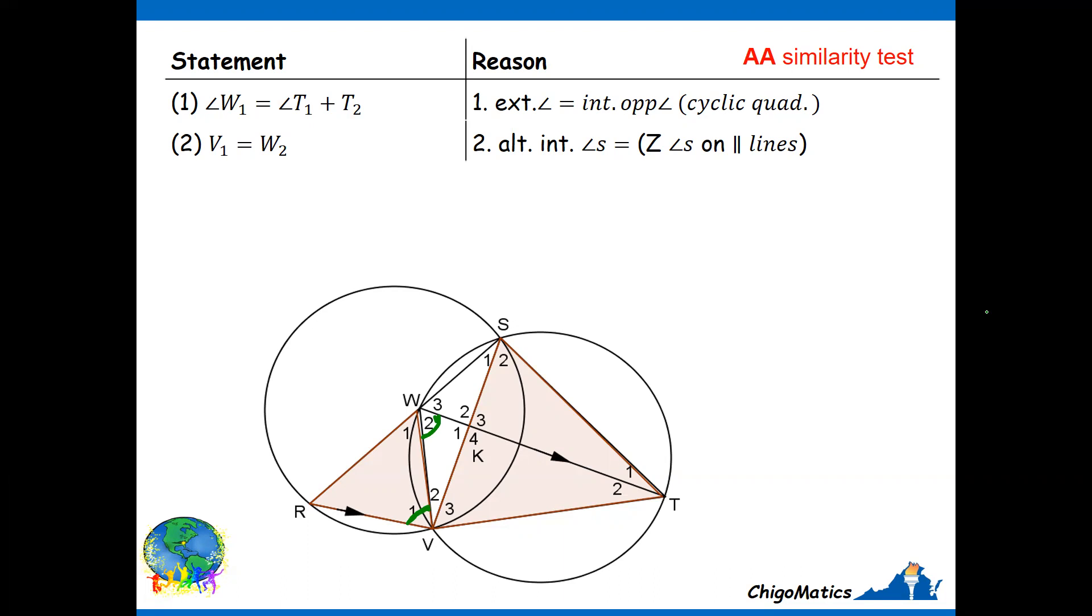Once I've identified that, V is fine but W2 is not in triangle SVT, so is there a way that W2 can be related to any angle in triangle SVT? If you search around, you realize that the chord TV subtends the angle W2, and that same chord TV subtends the angle S2.